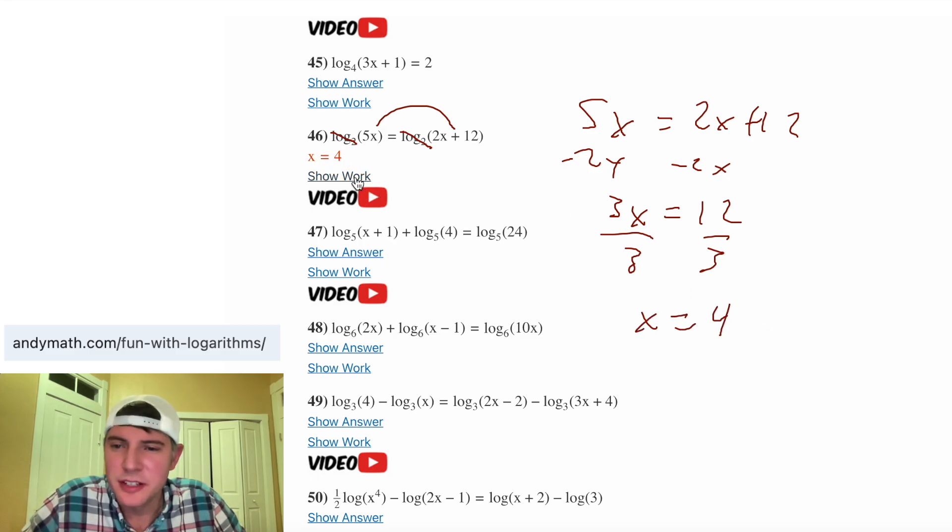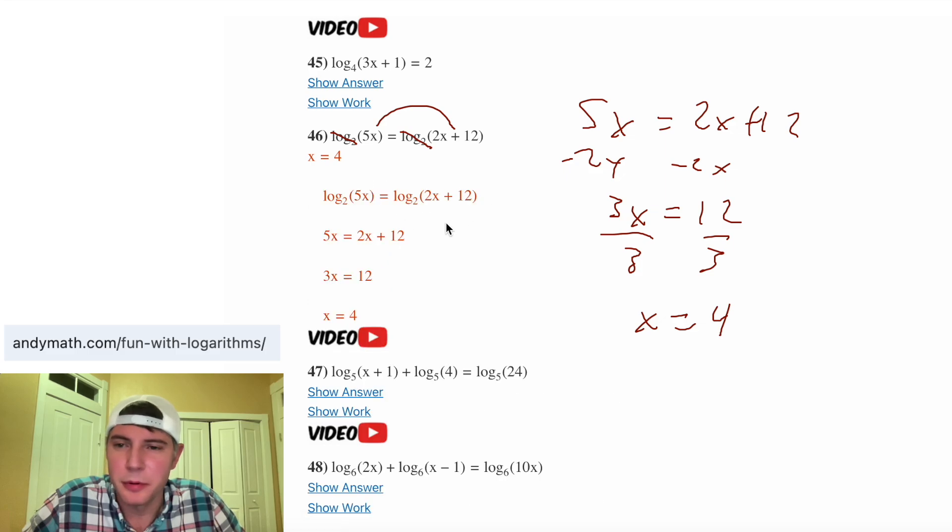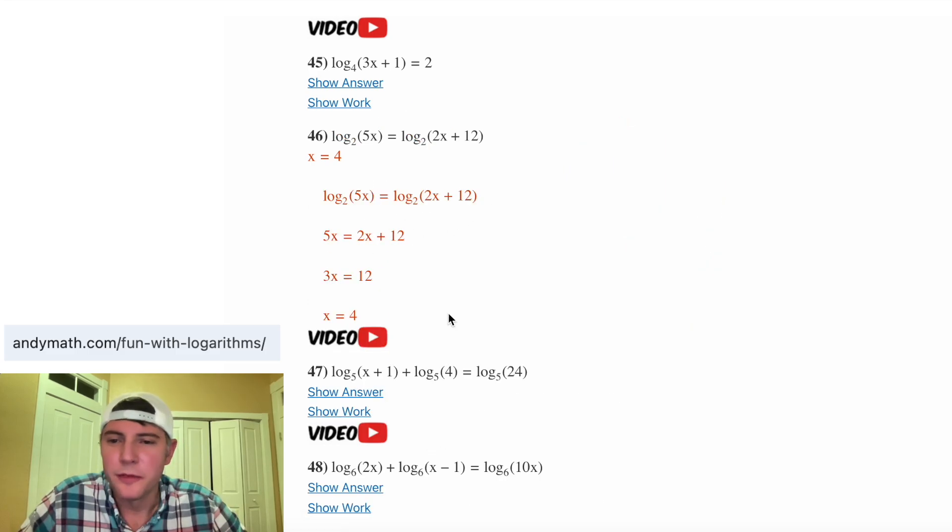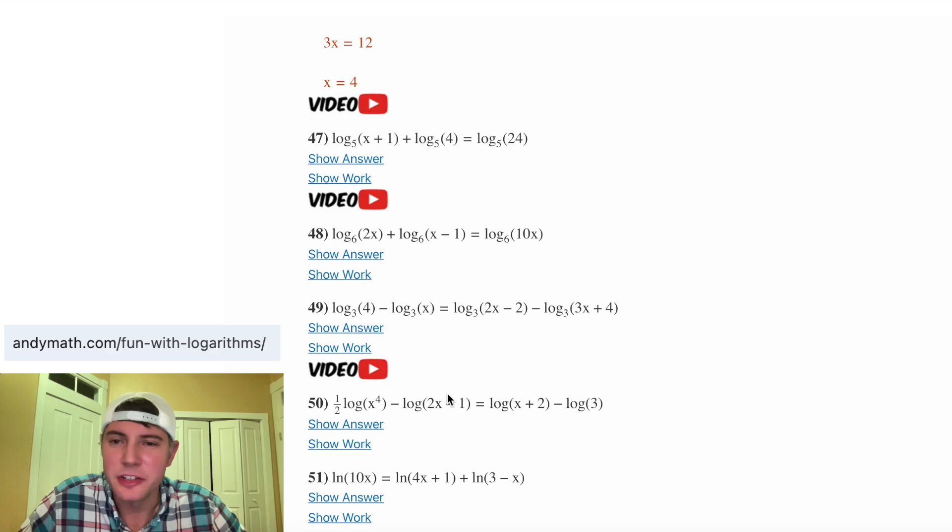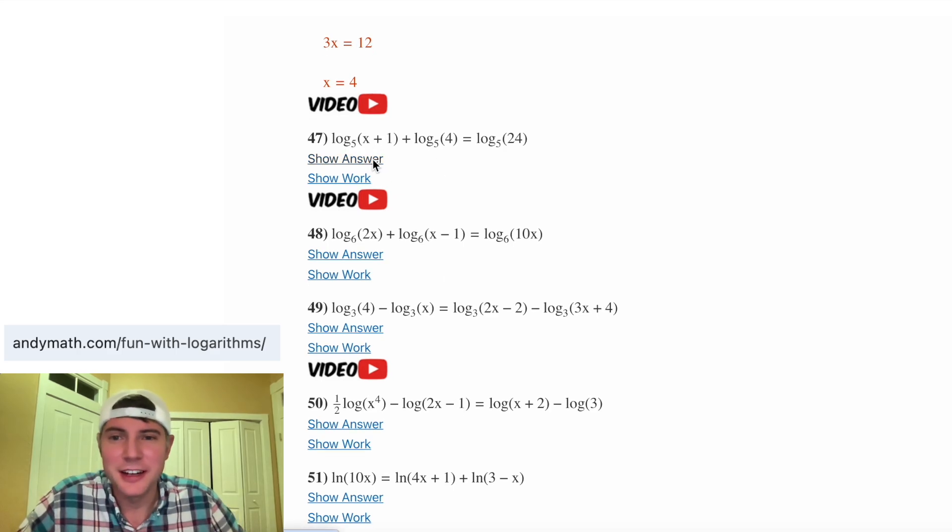Yep, it's 4. And if you get stuck, you can look at the show work and it breaks it down into all the steps. Now 47 is slightly different because you have two logs on the left side, but we know how to make single logs. We would condense this into a single log. We would say log base 5.